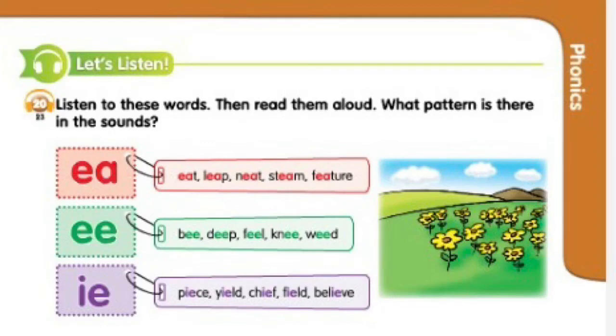Listen to these words. Then, read them aloud. What pattern is there in the sounds? E. Eat. Leap. Neat. Steam. Feature. E. Be. Deep. Feel. Knee. Weed. E. Peace. Yield. Chief. Field. Believe.